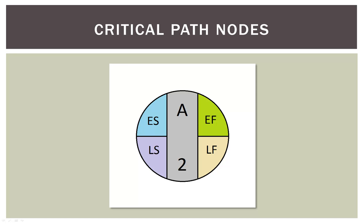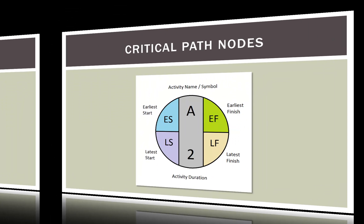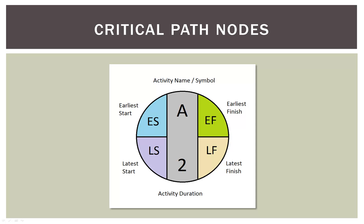We divided our nodes into regions and applied colors to represent the earliest start time, earliest finish time, latest start time, and latest finish time. At the top of the long gray column down the middle of our node, the letter — A in this case — is our activity name. The number at the bottom of that column is the activity duration, so activity A takes two weeks. The ES, EF, LS, and LF are what we're going to find by doing this process, and each is labeled in its corresponding colored region of the node.